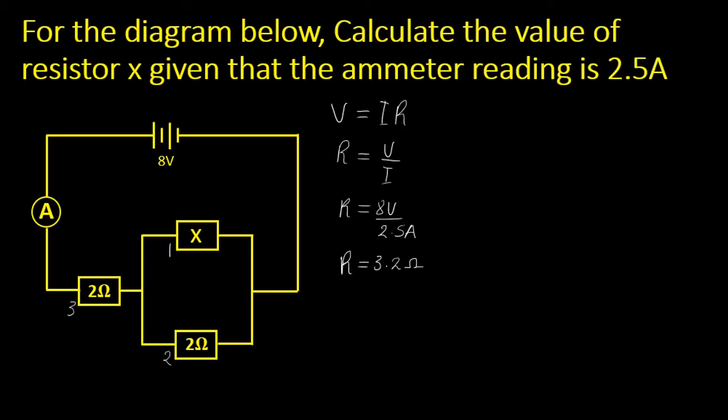So how do we find resistance if there's a parallel connection? We say one over the total resistance. Now this total resistance, let's call it R₁₂, that is our resistance total for one and two, is equals to 1/R₁ + 1/R₂.